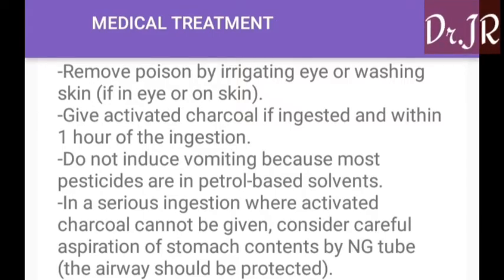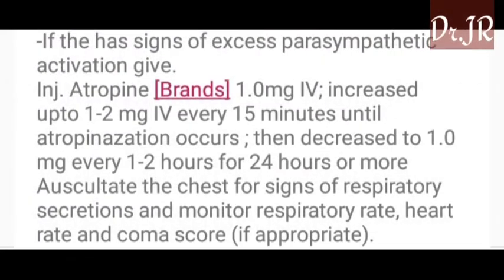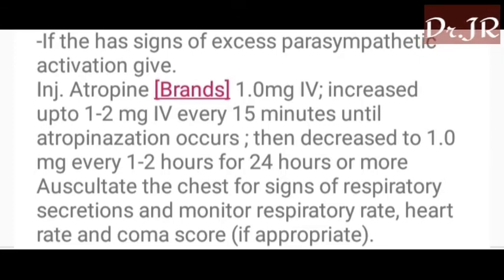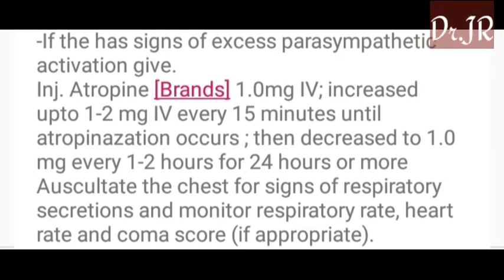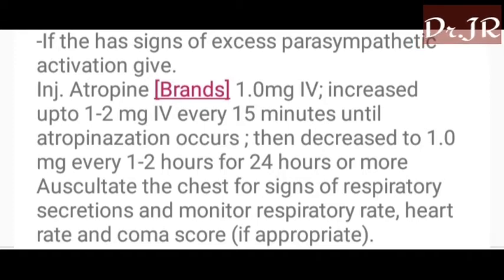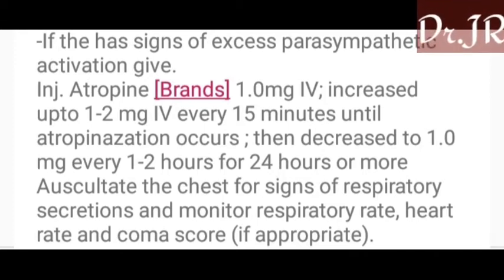The airway should be protected. If the patient has signs of excessive parasympathetic activation, give injection atropine 1 mg IV, increased up to 1 to 2 mg IV every 15 minutes until atropinization occurs, then decrease to 1 mg every 1 to 2 hours for 24 hours or more. Auscultate the chest for signs of respiratory secretions.